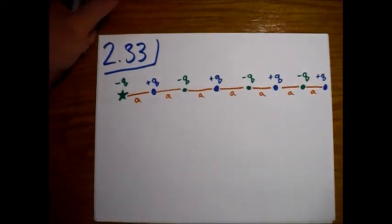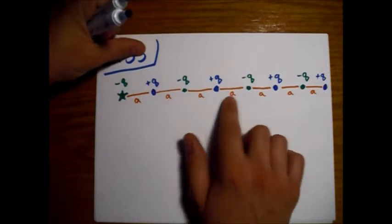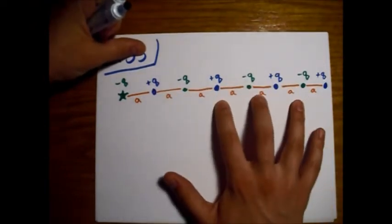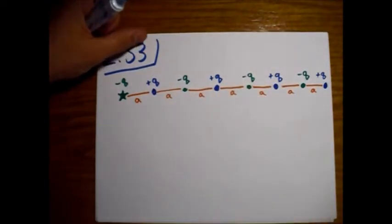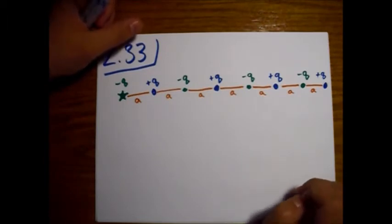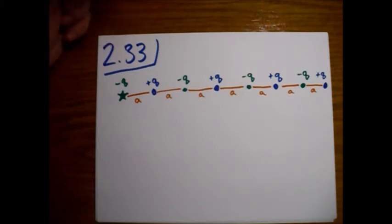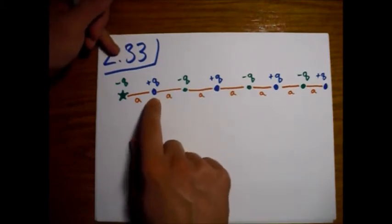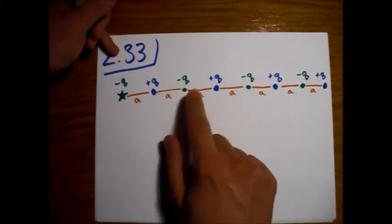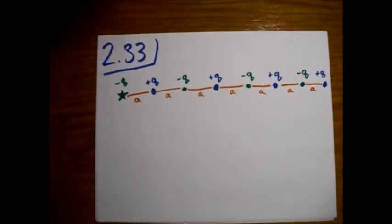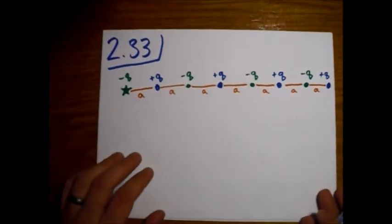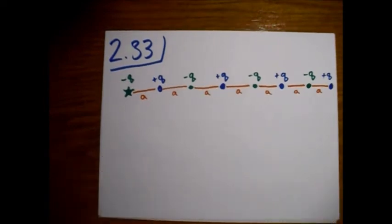So we need to find the potential created by all of these charges out to infinity, and basically they all add together. So we can look at the potential created by this one, plus the potential created by this one. Principle of superposition. So yeah, let's get started.